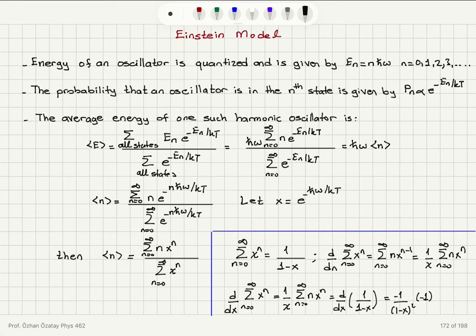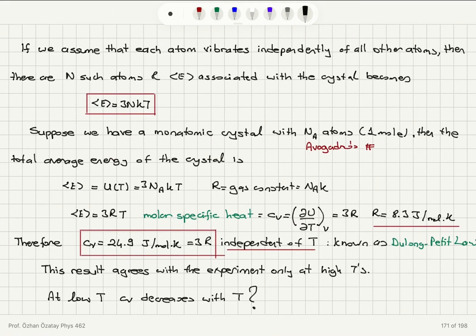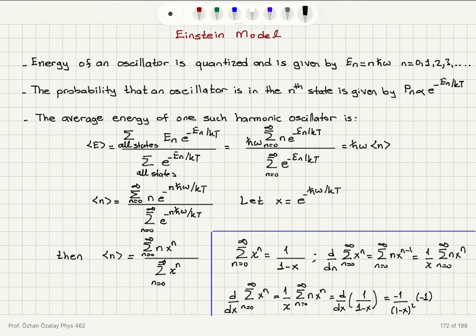We will continue our discussion of heat capacity, or molar specific heat if it's per mole. In the classical case, the Dulong-Petit law states that the heat capacity must be independent of temperature — the molar specific heat of a solid should equal 3R, independent of temperature. This assumes it is dominated by phonons, i.e., atomic lattice vibrations.